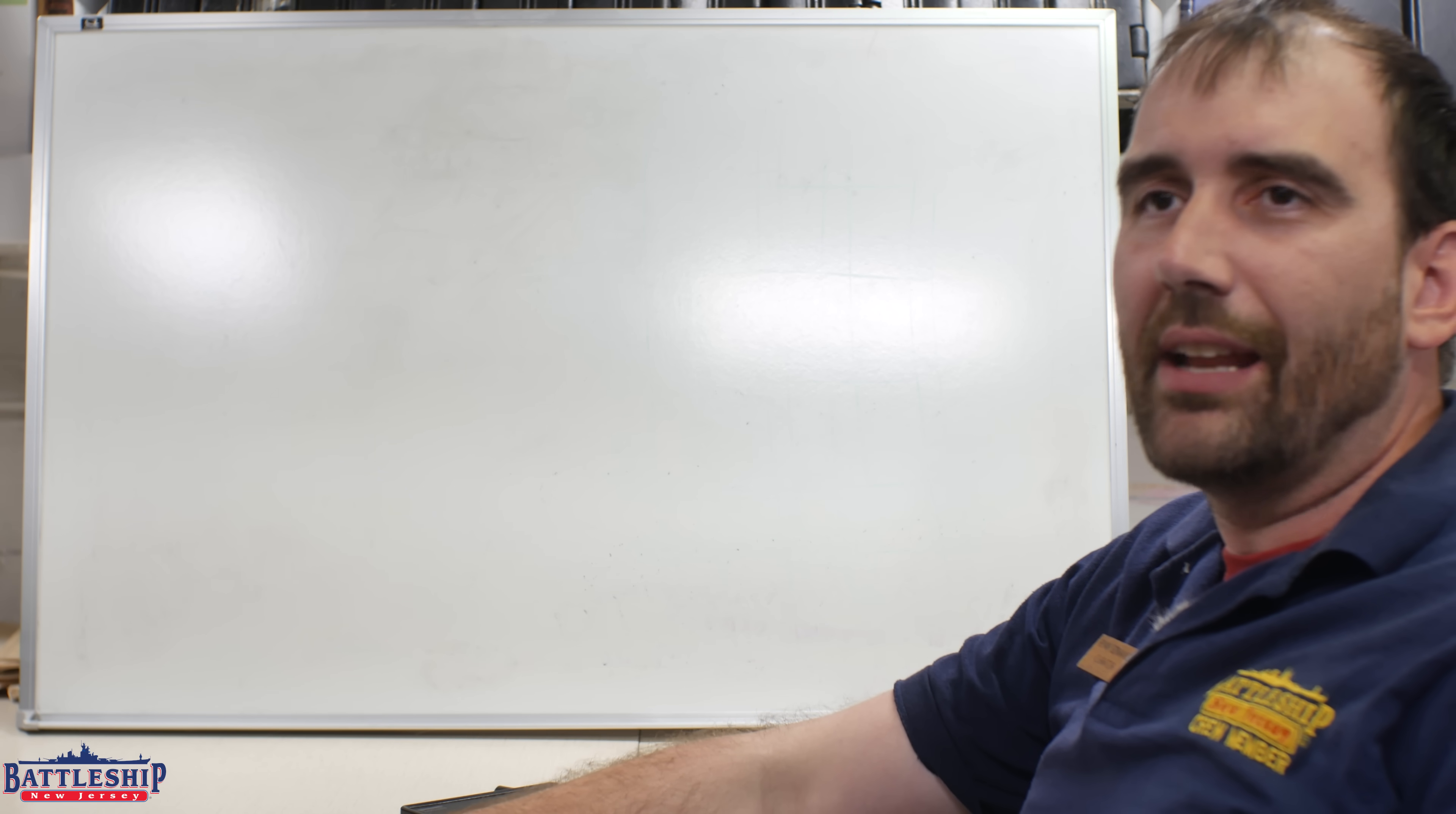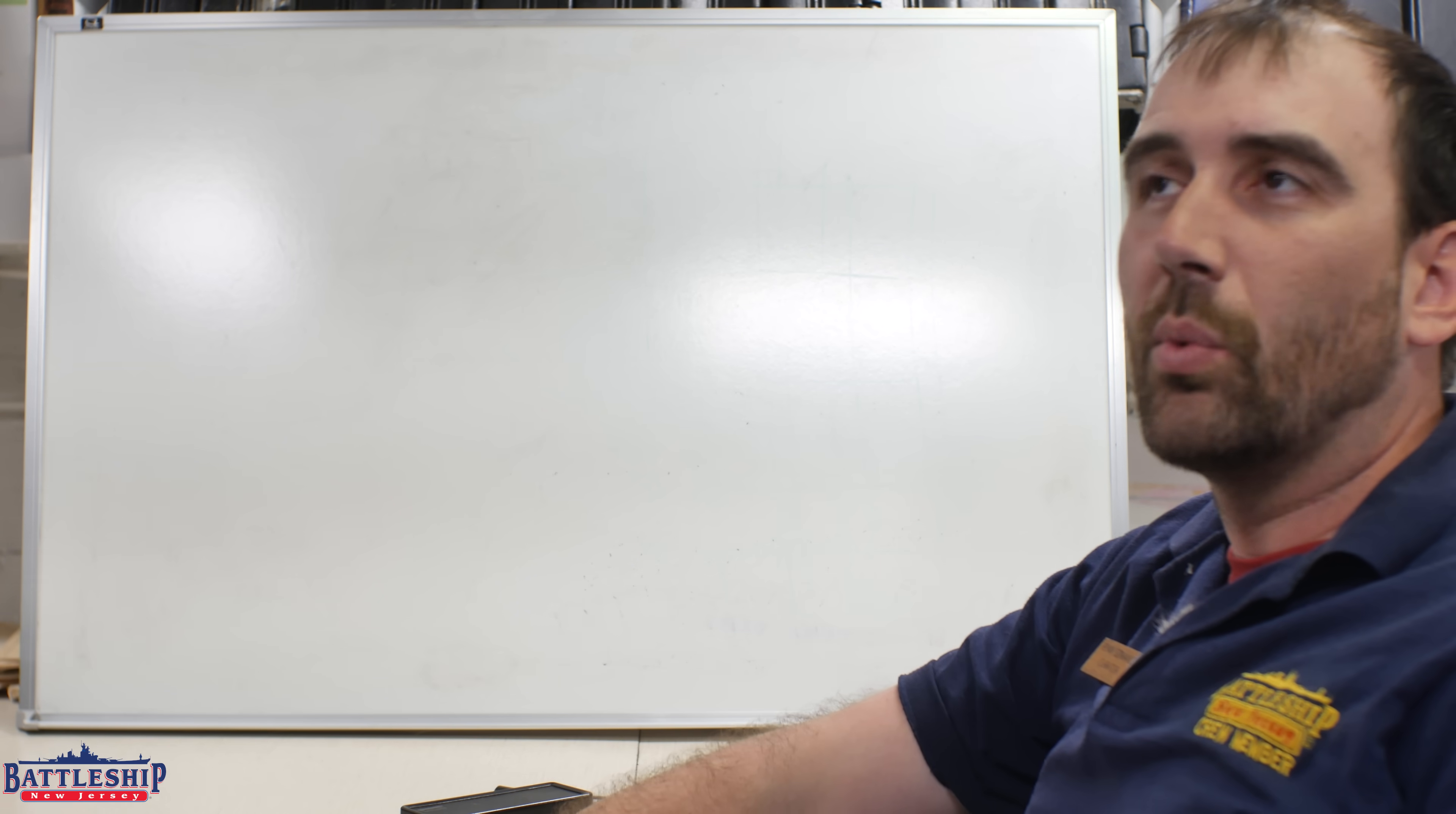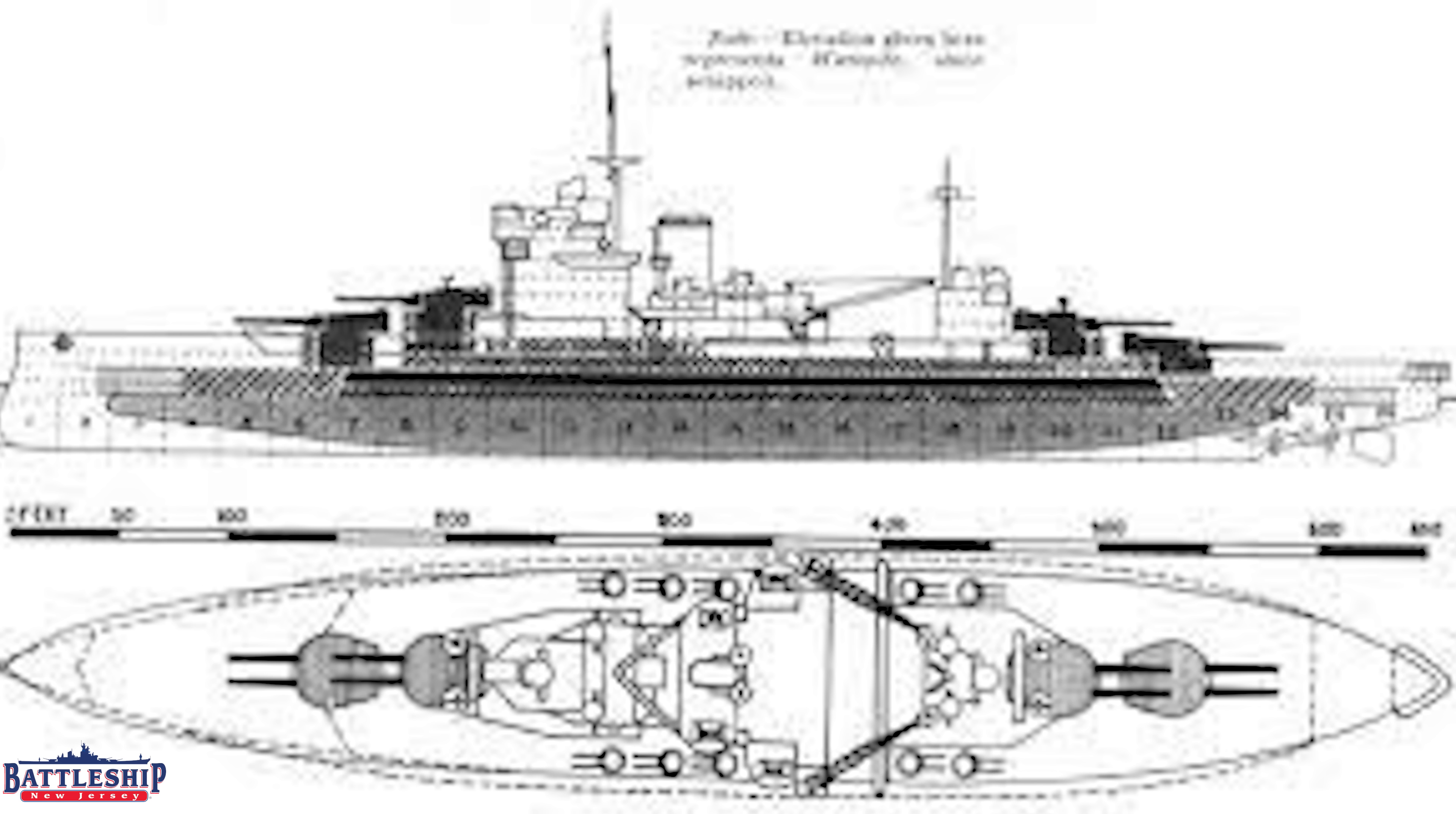Older ships tended to have armor that tapered out towards the edges. Check out this picture of a dreadnought battleship from a Jane's fighting ship. You can see all the different shades and marks on it to show the thicknesses of the various armors.